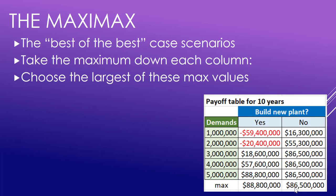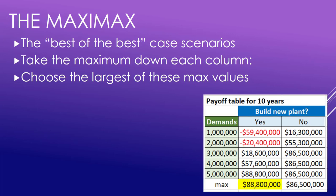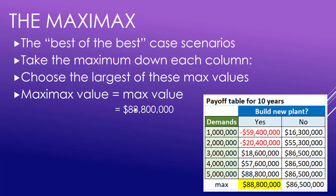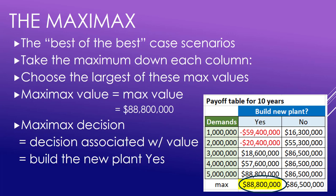The largest of these is our max value — it's the 88 million right here. So that's our maxi max value, 88.8 million. The maxi max decision is that decision associated with it, which is yes, build the plant. Maxi max value: 88 million; decision: yes. We stand to make the most money by building the plant — that's our best of our best case scenario.